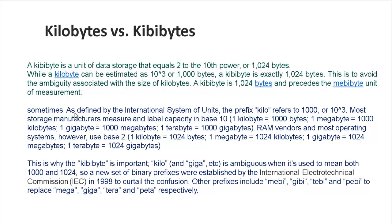Here are the differences between kilobyte (KB) and kibibyte (KiB). A kibibyte is a unit of data storage that equals 2 to the 10th power, or 1024 bytes. A kilobyte equals 10 to the 3rd power, or 1000 bytes. So a kibibyte is exactly 1024 bytes, while a kilobyte is 1000 bytes.